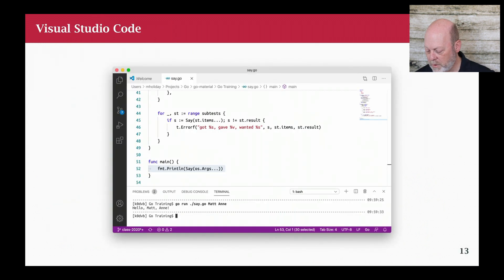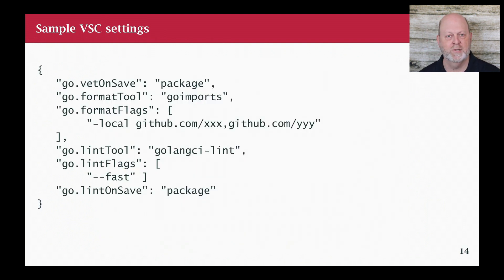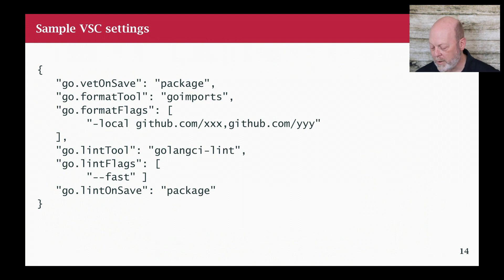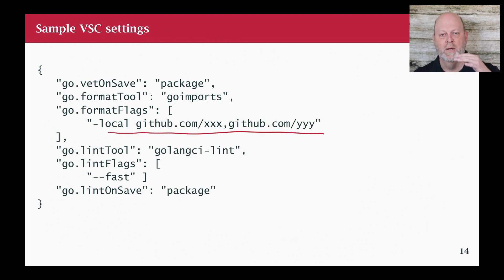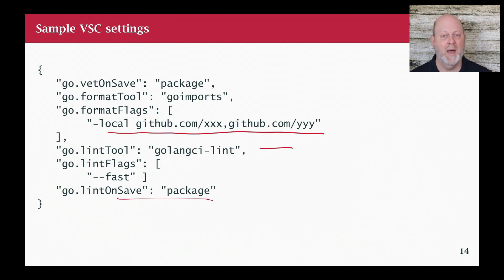Let's go back to setup. In Visual Studio Code, you can set things up. There's the new gopls thing, and I think it's on by default, but you can still decide how to run a few of these things. Here are some basic VS Code settings: I want it to run vet on save at the package level, and run GoImports for formatting. For format flags around the imports list, you typically have the standard library, then a space, then third-party packages from GitHub, then a space, then local modules — with a prefix setting to treat local modules differently. The GoLint tool, lint flags, and lint on save at the package level.